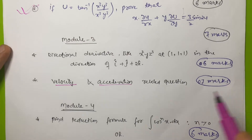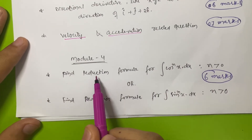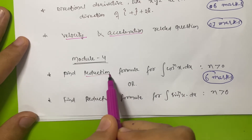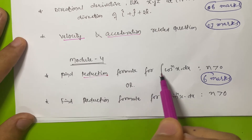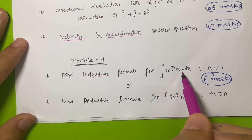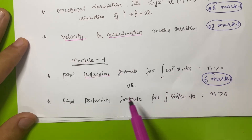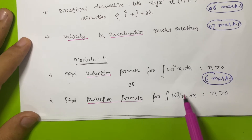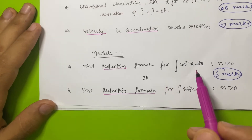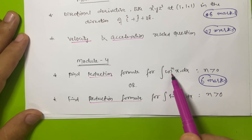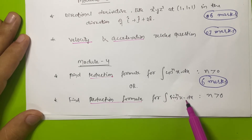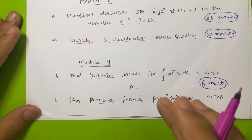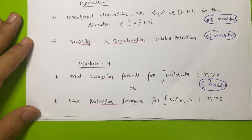In Module 4, even if you don't know integration well, there is an important question that is always asked: find the reduction formula for ∫cos^n(x) dx where n > 0. In some papers they also ask the reduction formula for ∫sin^n(x) dx. If you refer to this, you can score 6 marks in Module 4.